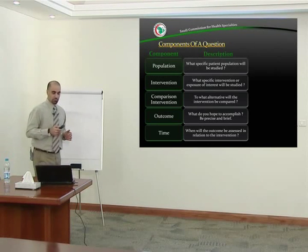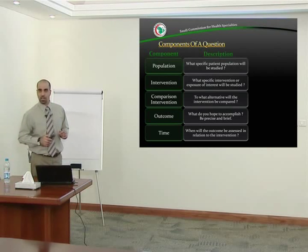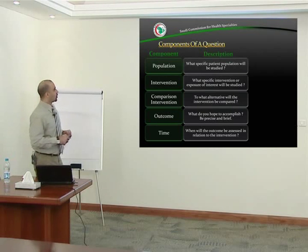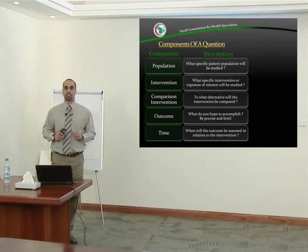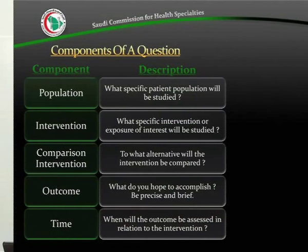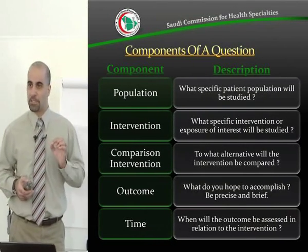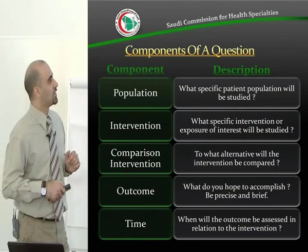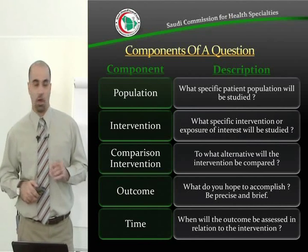Components of a research question — the research question that you come up with has to have certain components. One of them is the population. In other words, what specific patient population will be studied? Are they MI patients, are they diabetic patients, hypertensive patients, and so on. So it should be specific enough to identify the population you are going to carry out the study on.